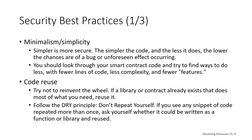Let's talk about code reuse. Try not to invent the wheel. If a library or contract already exists that does most of what you need, then reuse that library or contract. Within your own code, follow the don't-repeat-yourself principle. If you see any snippet of code repeated more than once, ask yourself whether it can be written as a function or library and reused. Code that's been extensively used and tested is likely more secure than any new code you write. Beware of the not-invented-here syndrome, where you're tempted to improve a feature by building it from scratch — the security risk is often greater than the improvement value.